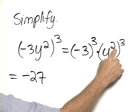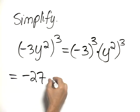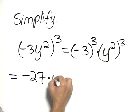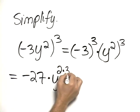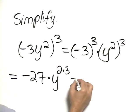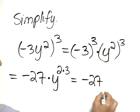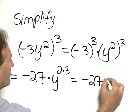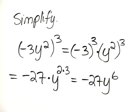For y squared cubed, we multiply together those exponents: 2 times 3. So our final answer is negative 27y to the 6th.